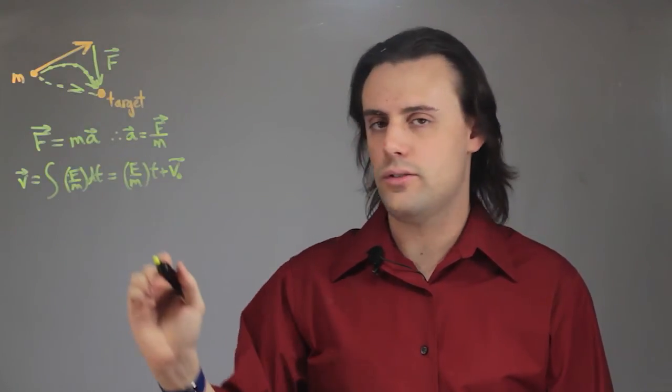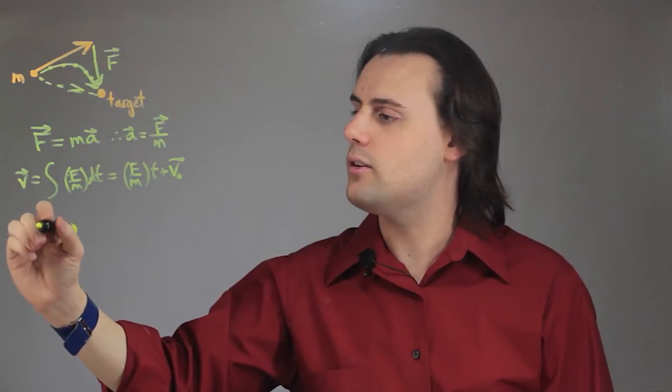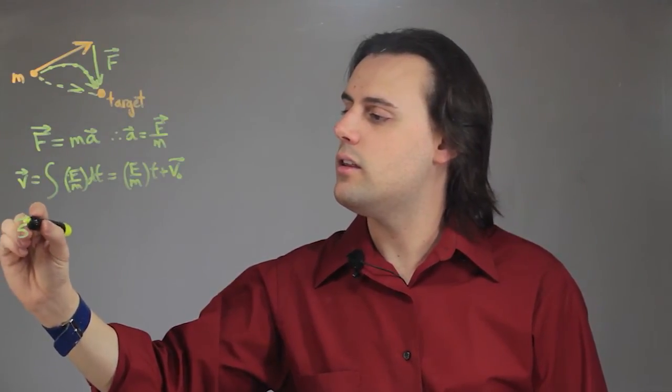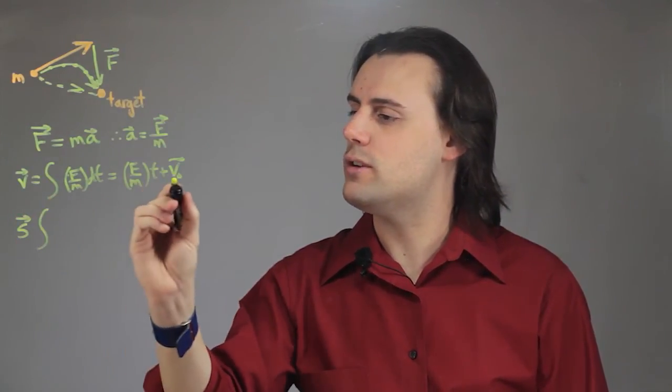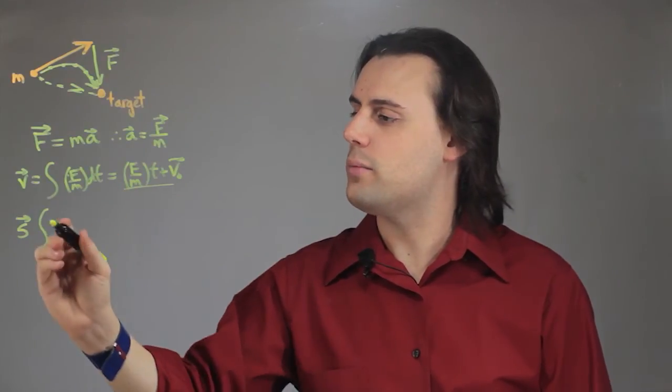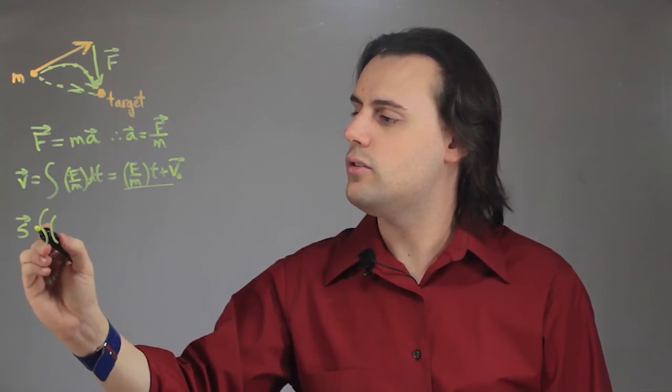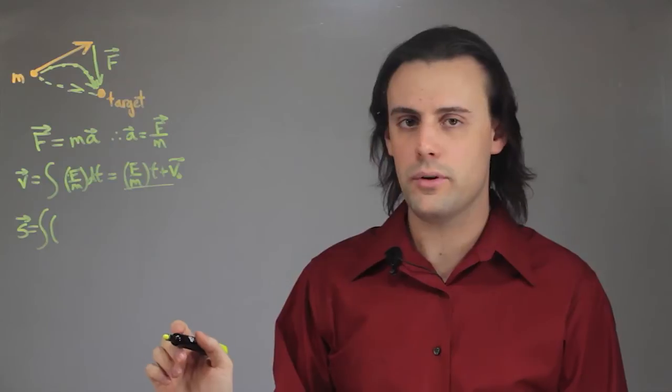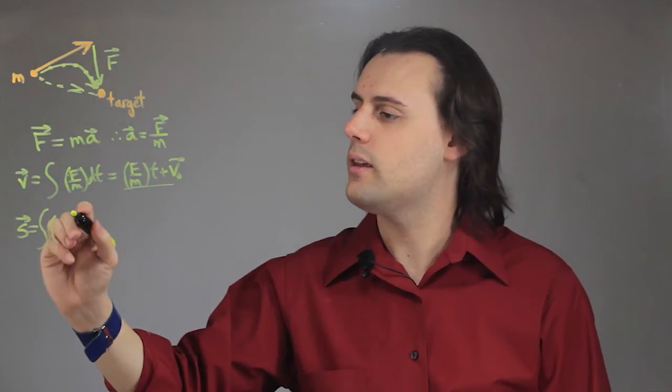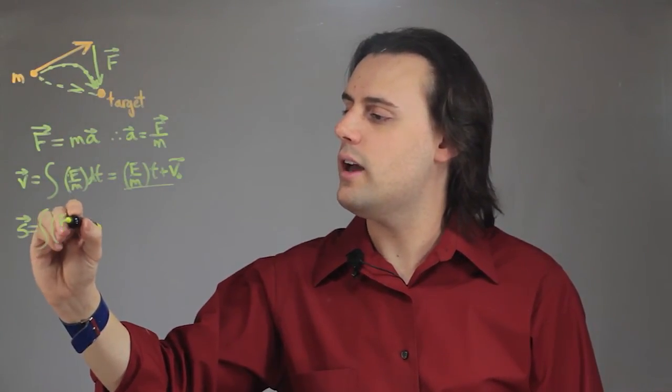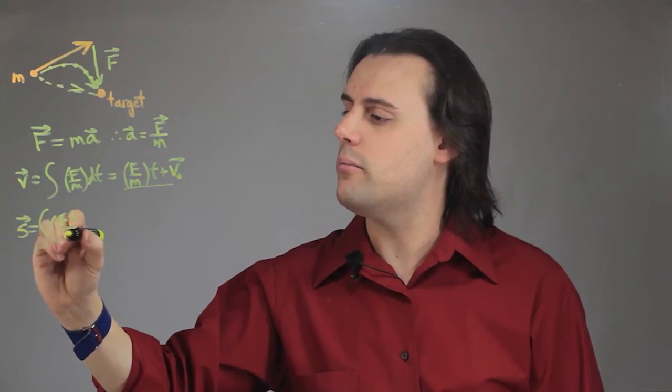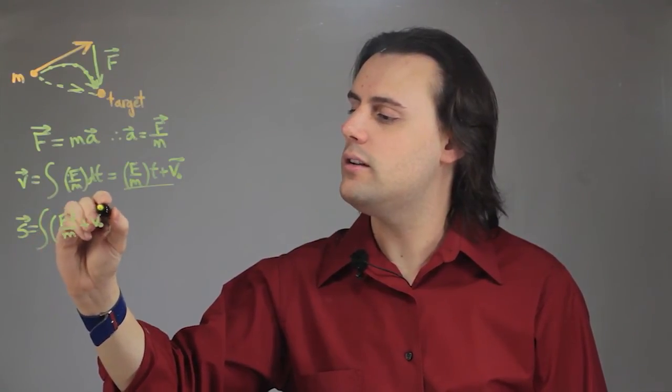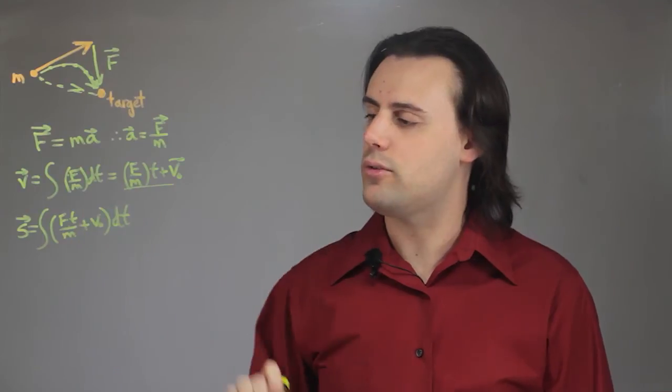And then we do this one more time. We integrate the velocity expression we just found with respect to time to calculate the position vector, the trajectory. We're going to have F t over m plus v naught and we integrate that with respect to time.